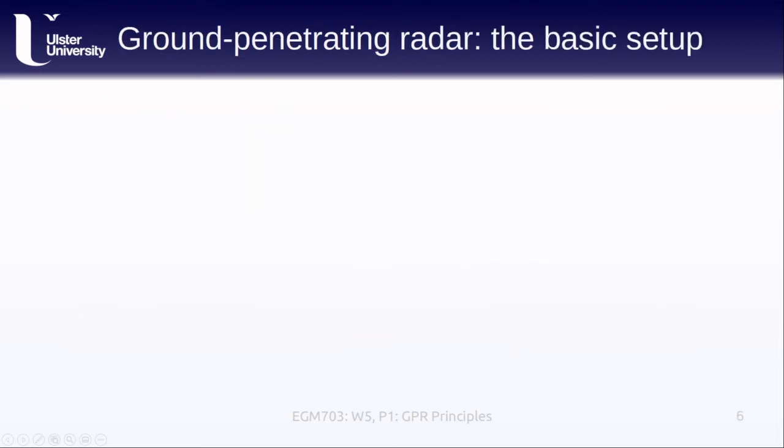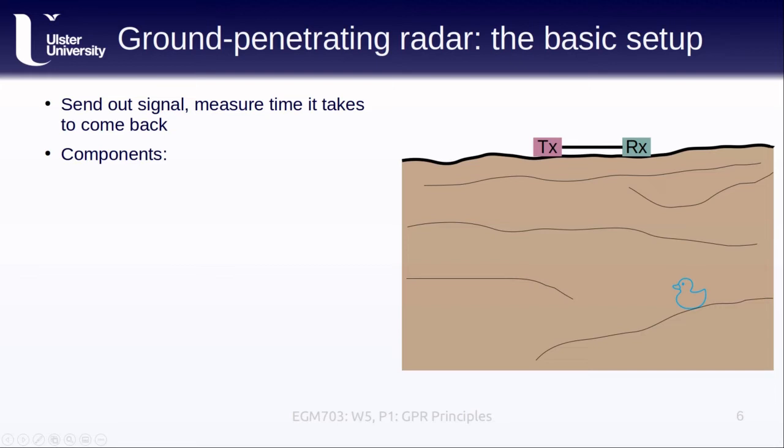Like we've discussed with regular radar, the basic idea behind ground penetrating radar is that we send out a signal and measure how long it takes to come back. The basic setup looks something like this. We have a transmitting antenna, which actually sends out the signal, and a receiving antenna, which receives and records the signal that comes back. Most modern GPR instruments send out a frequency-modulated or chirped signal, just like we've seen with satellite-based radar sensors.